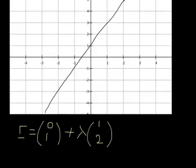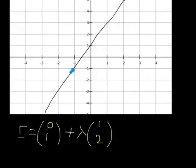The vector 1,2 is the direction of the line. To go from one point to another point on the line, you go along 1 and up 2. From there to there it's along 1, up 2; from here to here, along 1, up 2. So this is one equation that we could use for the line.